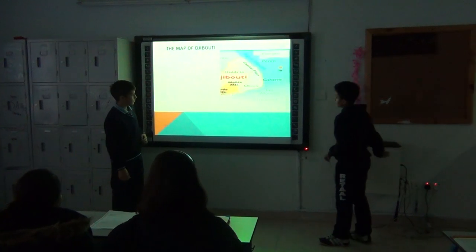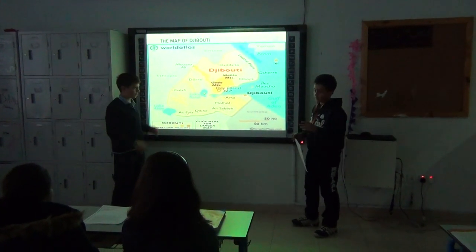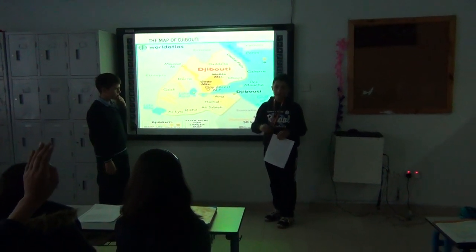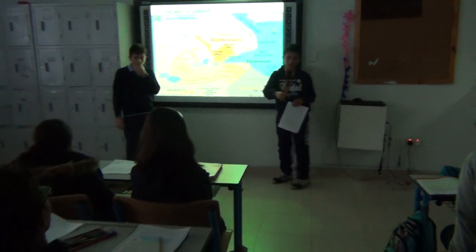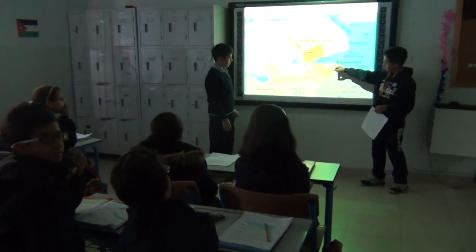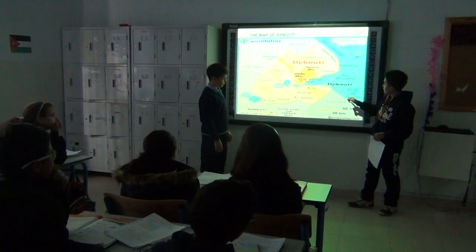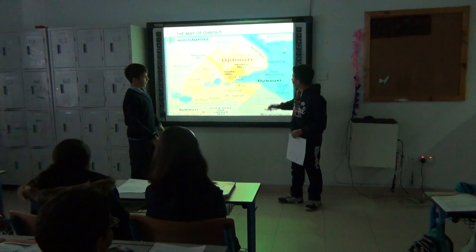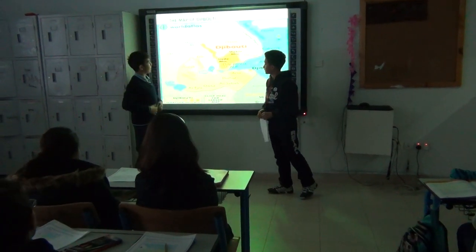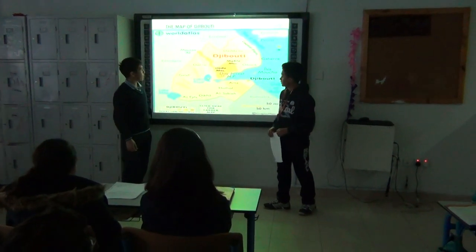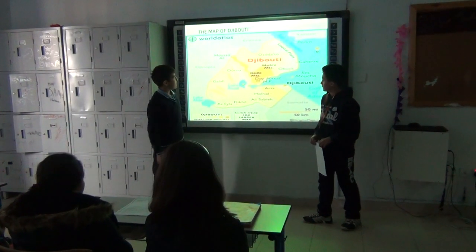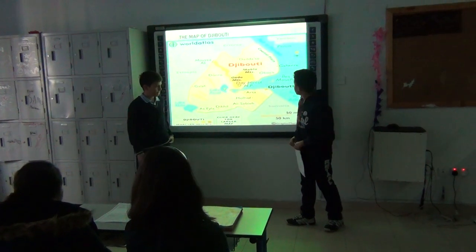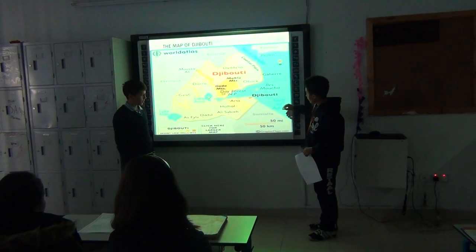The map of Djibouti. The main city and only port is the capital city, Djibouti. It lies on the Gulf, bordering to the south, south-east, and north-east, bordering the sea. The neighboring countries are Eritrea, Ethiopia, and Somalia.